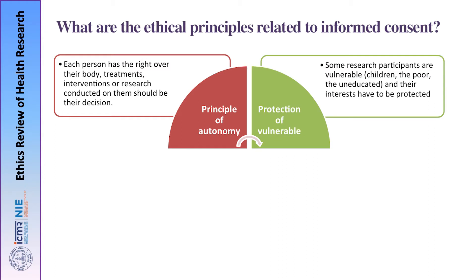The next important principle is the protection of vulnerable participants. In all research projects, there are some participants considered vulnerable — for example, children, poor people, people from lower socioeconomic status, and people of lower educational attainment. Their interests need to be protected and their welfare has to be kept in mind. That is the second important principle underlying the informed consent process.